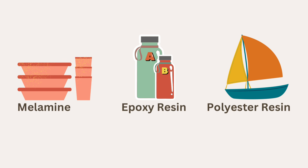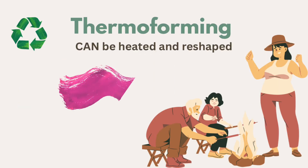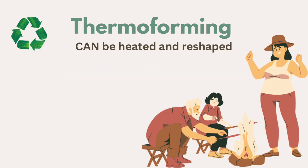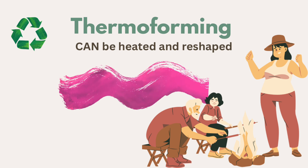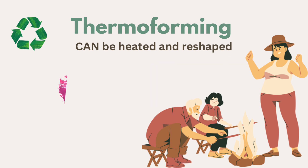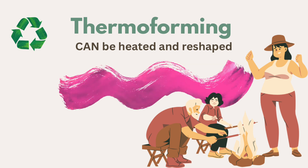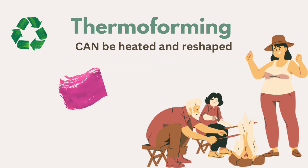Some examples of thermosetting plastics are melamine, used in camping plates; epoxy resin, a two-part resin used in casting; and polyester resin, used for making boats.